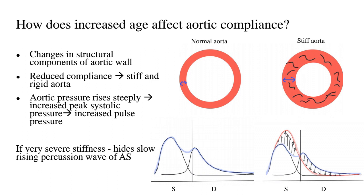Hemodynamically, the aortic pressure rises steeply with a stiff aorta, leading to an increased peak systolic pressure and thereby an increased pulse pressure. In a normal aorta, we have two phases — systole and diastole. During the systolic phase, the initial incident wave or percussion wave occurs, and the subsequent diastolic wave results from reflection from the peripheral arterial tree. An amalgamation of both waveforms leads to the contour outlined in blue, which is seen in a normal aorta.